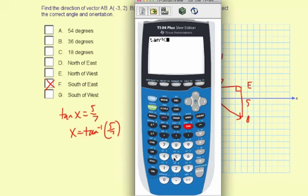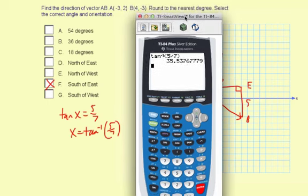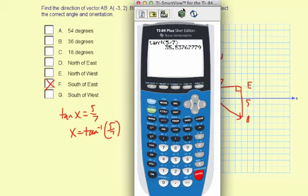So second tangent of 5 divided by 7, 35.537 and so forth. And we're rounding to the nearest degree here, so it's actually going to be 36 degrees.